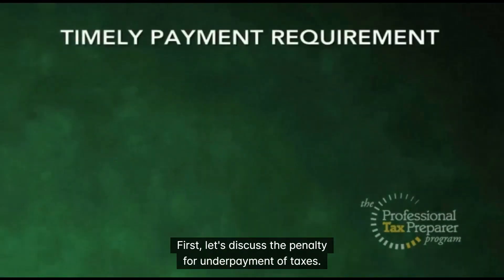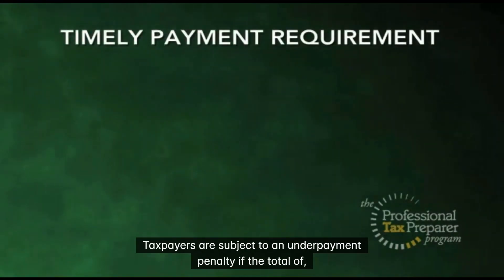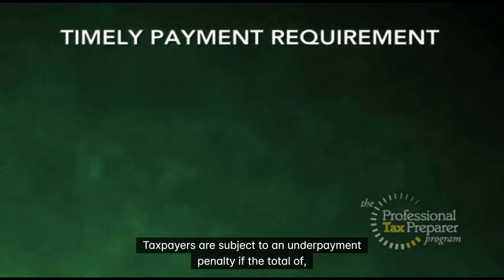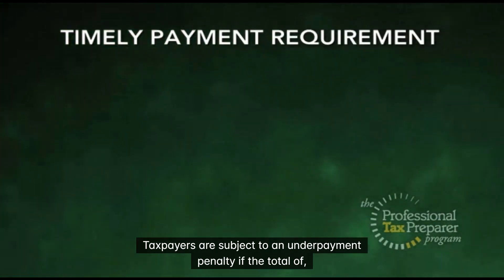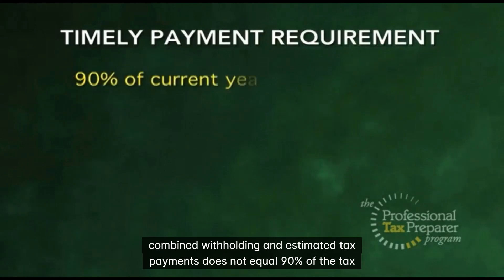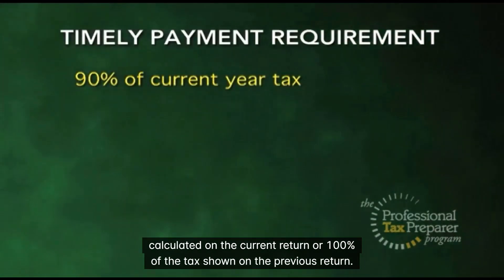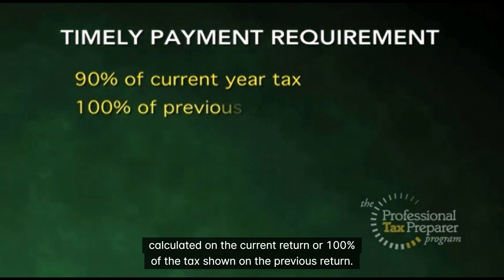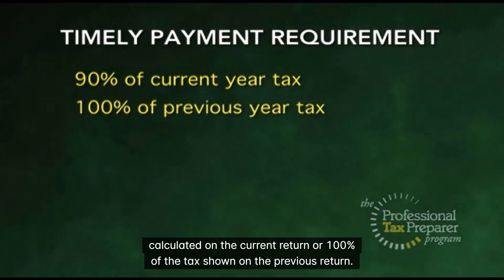First, let's discuss the penalty for underpayment of taxes. Taxpayers are subject to an underpayment penalty if the total of combined withholding and estimated tax payments does not equal 90% of the tax calculated on the current return, or 100% of the tax shown on the previous return.